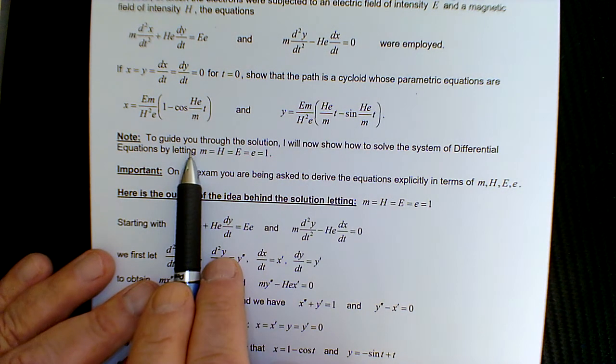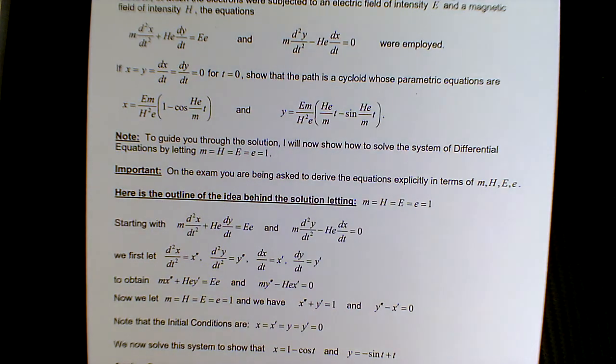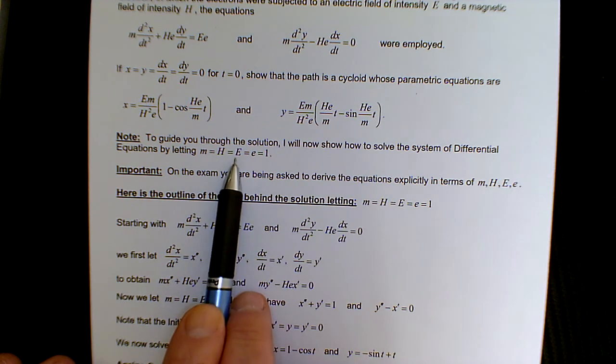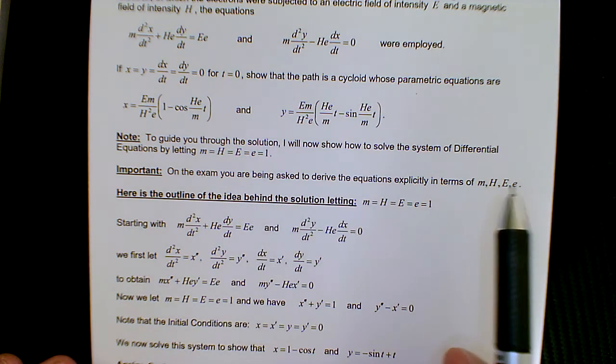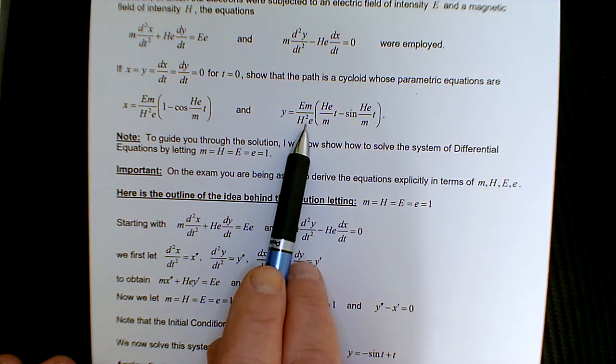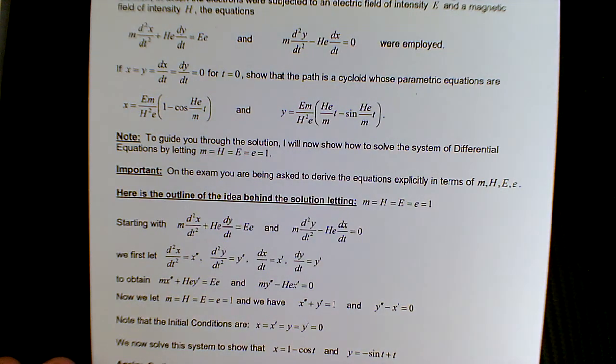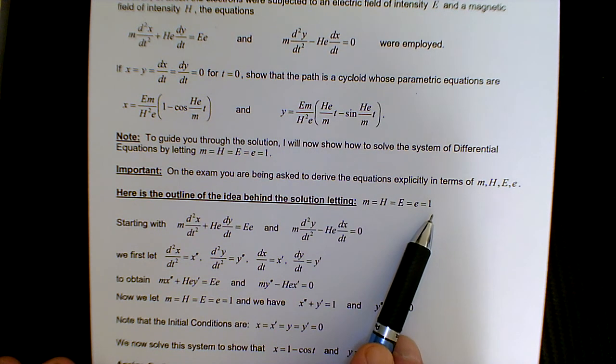So what I'm going to do, as I already mentioned, is basically guide you through the solution, but by letting m, H, e, and E all equal 1. And then what you're going to do on the exam is do it in terms of the variables. And don't be intimidated, because I'm going to get you started with it in the outline of the solution for letting all those constants be equal to 1.